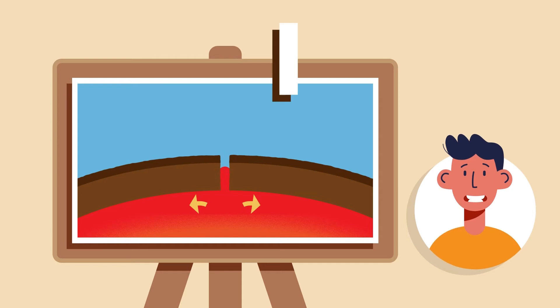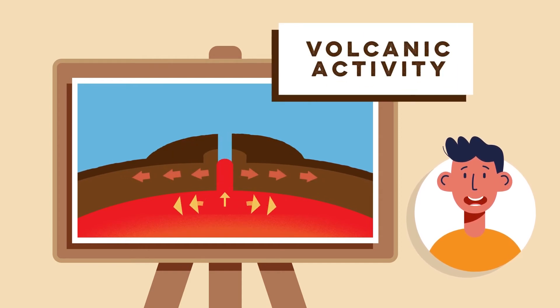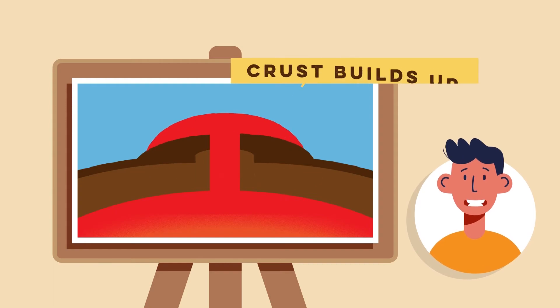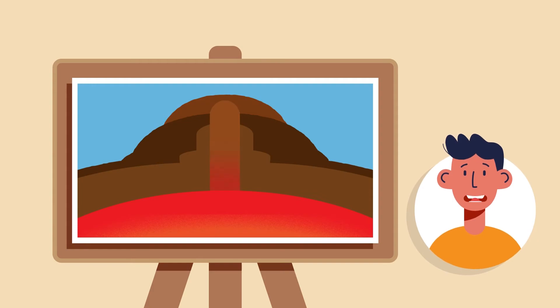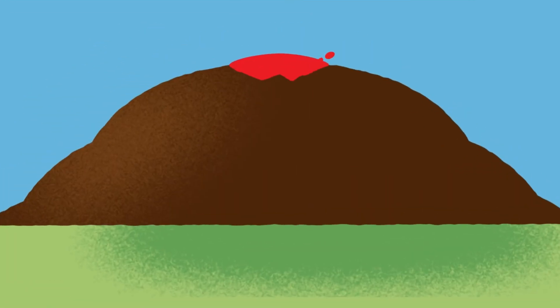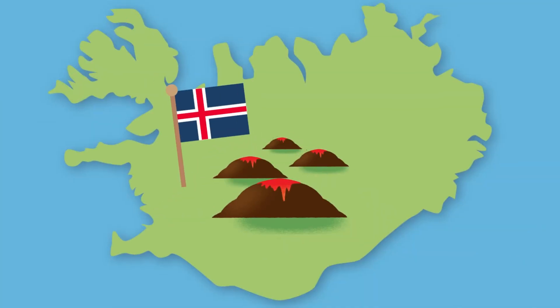Step 4 is volcanic activity. The rising magma at constructive boundaries not only forms new crust but also creates volcanoes. These volcanoes are usually less explosive than those at destructive plate boundaries because the magma at these boundaries is less viscous. Iceland, located on the mid-Atlantic ridge, has many volcanoes.